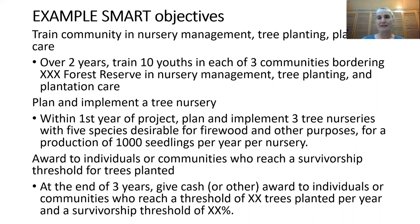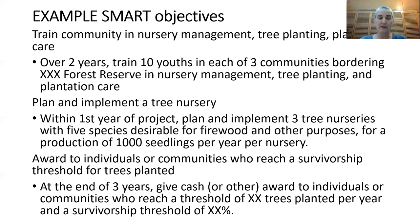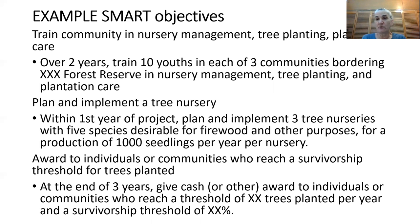Objective two: plan and implement a tree nursery. Within the first year of the project, plan and implement three tree nurseries — one for each community — with five species desirable for firewood and other purposes, for production of 1,000 seedlings per year per nursery. The third objective was to award individuals or communities who reach a survivorship threshold for trees planted. At the end of three years, give a cash or other award to individuals or communities who reach a threshold of a certain number of trees planted per year and a survivorship threshold of XX percent after three years.